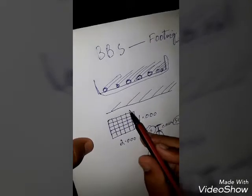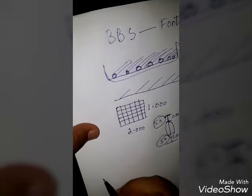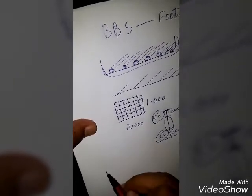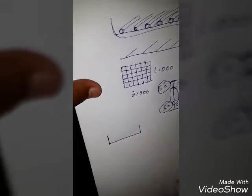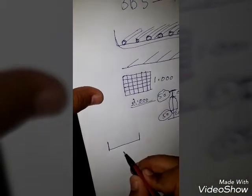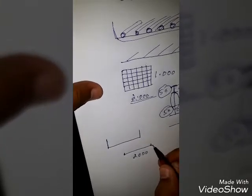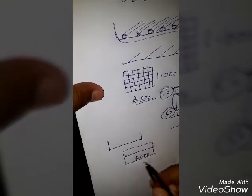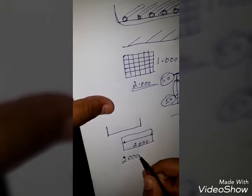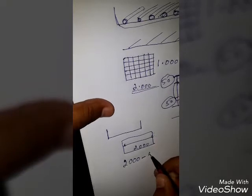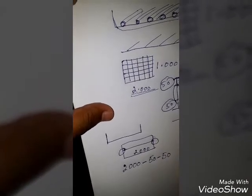First we will find the total length of the main bar. The total length of the footing is 2 meters, i.e., 2000 mm. From this we subtract the cover from both sides: 50 mm from one side and 50 mm from the other side. So 2000 minus 100 gives us 1900 mm as the clear length before accounting for the L-bends.